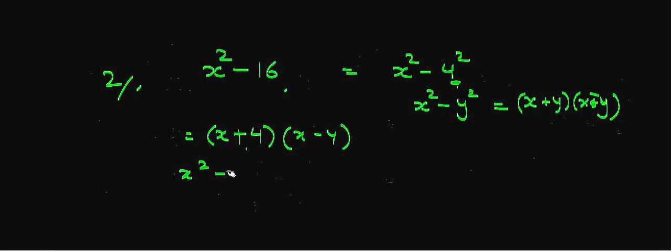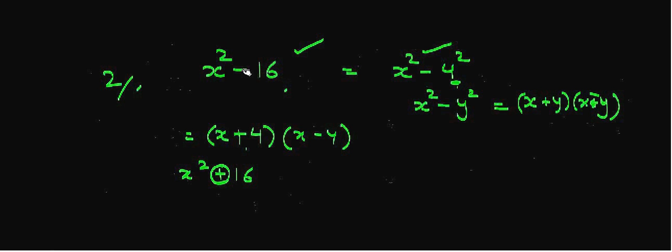Remember that x² + 16 cannot be factorized by this method because of the positive sign. This identity can be used only if there is a negative sign between the two squares.